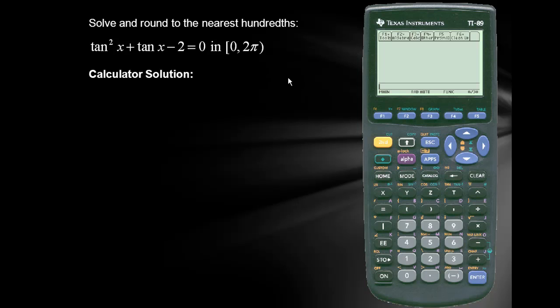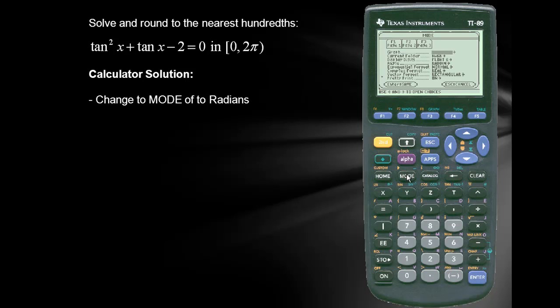Here's the calculator solution. First let's change the mode of our calculator to radians. So I'll press the mode key. I'll scroll down to our fourth line which is radian. And if I move to the right, notice I can toggle up and down between radian and degree. We want radian so I'll lock that in with enter, and I'll return back to our home screen.